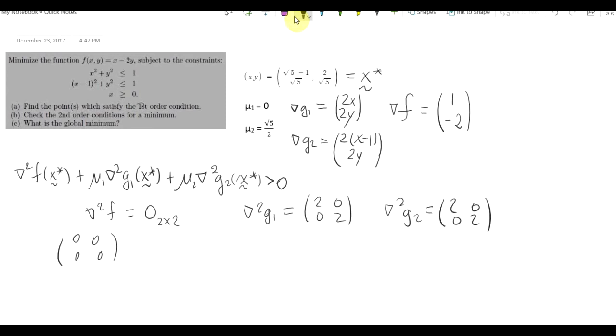And of course, we're using the Lagrange multipliers, mu1 and mu2, that we found for this candidate point. Those values are written up above, and I'm about to substitute them in.